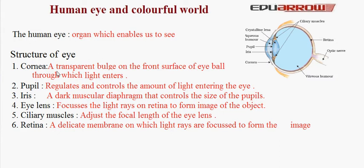3. Iris. A dark muscular diaphragm that controls the size of the pupil is the iris. When we are in bright light, the iris contracts so that light enters through the pupil in a lesser amount, because maximum light is already present around us. When we are in dim light, the iris expands so that the maximum amount of light enters the eye and we can see the object.